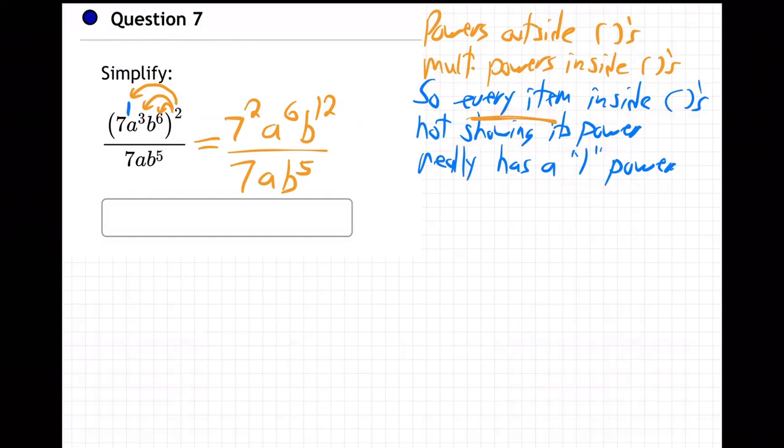Okay, then what do we do? Well, then we're going to subtract powers, right? So when you have like B to the 12 over B to the five, that's B to the seven. Powers subtract when they're top and bottom like that.